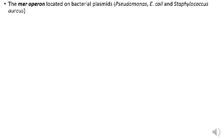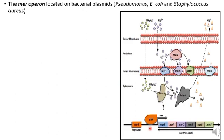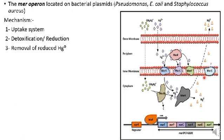The mer operon, located on the bacterial plasmid, is involved in bacterial resistance to mercury. It consists of a cluster of up to eight genes: mer-R, mer-T, mer-P, mer-C, mer-A, mer-B, mer-F, and mer-E. The mechanism involves three steps: the uptake system, detoxification or reduction, and removal of the reduced mercury.